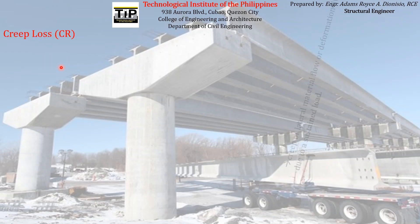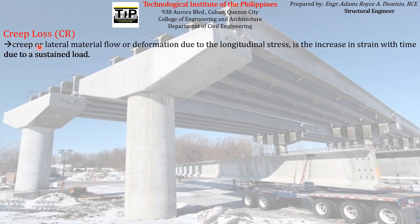Creep loss is actually a product of what we call creep, or lateral material flow or deformation due to the longitudinal stress, which is actually the increase in strain with time due to a sustained load. That is the main reason why creep happens — because of sustained load being carried by the concrete. Creep occurs after some time, after the concrete already attained its strength and already supports the sustained loads, which are the superimposed dead loads and live loads, or even part of the live loads.